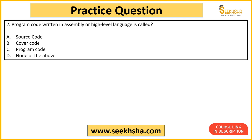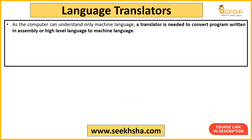Next question: Program code written in assembly or high-level language is called — options are: source code, cover code, program code, or none of the above. When you write code in a high-level language like C++, it is called source code. Option A is the correct answer.